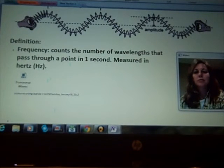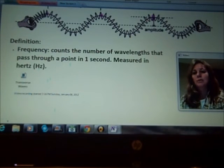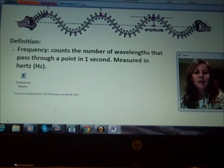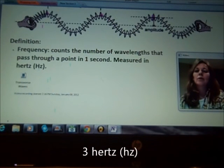So I have the first one is right here, the second one is right here, and the third one is right here. So if those three wavelengths pass through this point of this hand in one second, we would measure that as the frequency as three hertz.